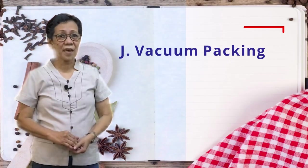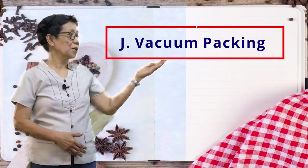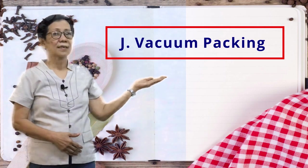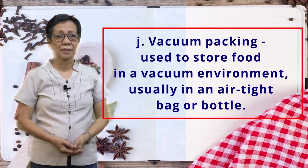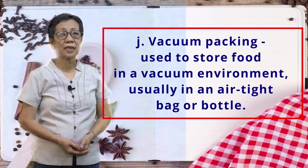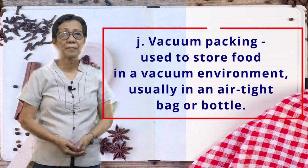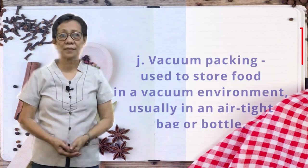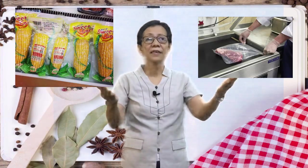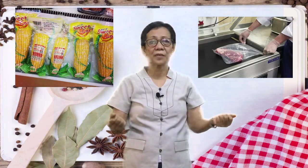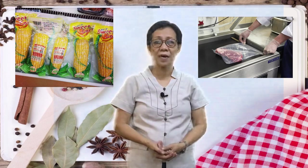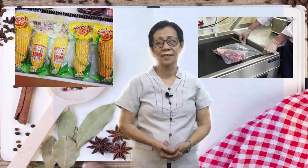Letter J: Vacuum Packing. This is used to store food in a vacuum environment, usually an airtight bag or bottle. Here are examples of food or products produced through vacuum packing.